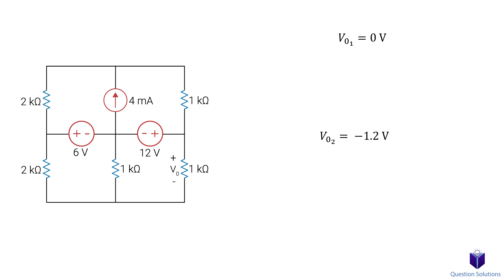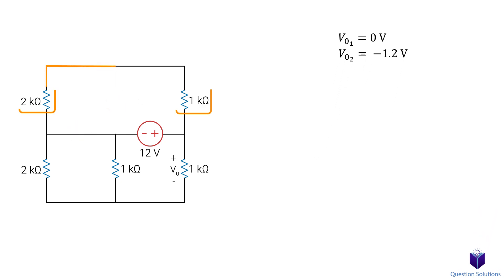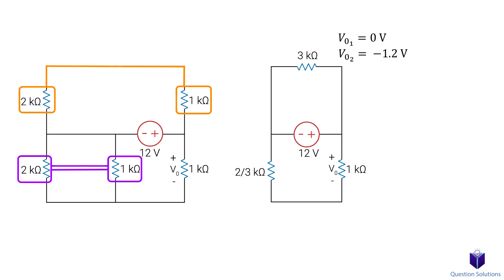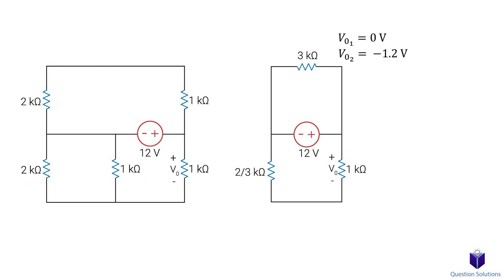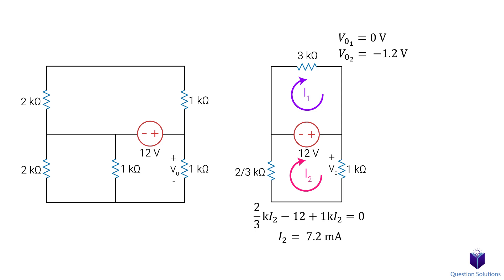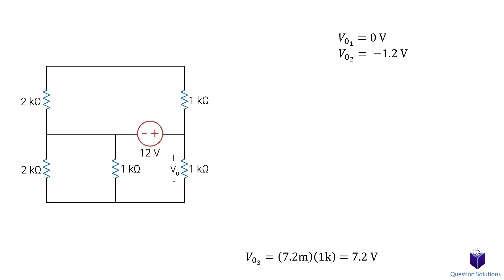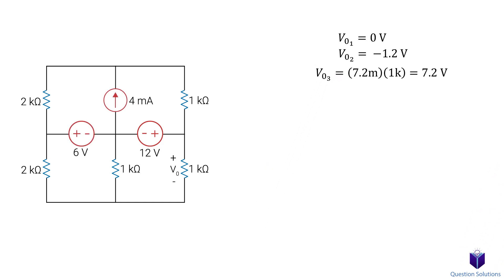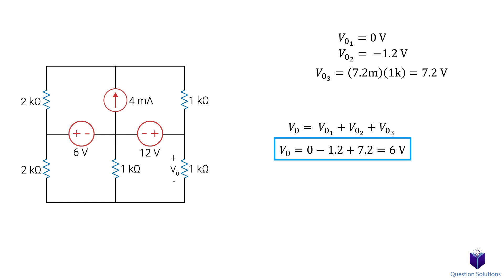The last source we need to consider is the left side voltage source. In this circuit, these two resistors are in series, and these two are parallel to each other. So this is what our circuit looks like after combining resistors. Now we can solve this using voltage division or mesh analysis, so let's go with mesh analysis. This time, we can pick both currents to be clockwise. Let's write an equation for mesh current 2. We can directly solve for the current, we get 7.2 milliamps. So using this value, we can figure out the voltage in the resistor. With this voltage source, the voltage in our resistor is 7.2 volts. The last step is to combine all of the voltage values we got. With all three sources, the voltage in the resistor is 6 volts, and that's our answer.